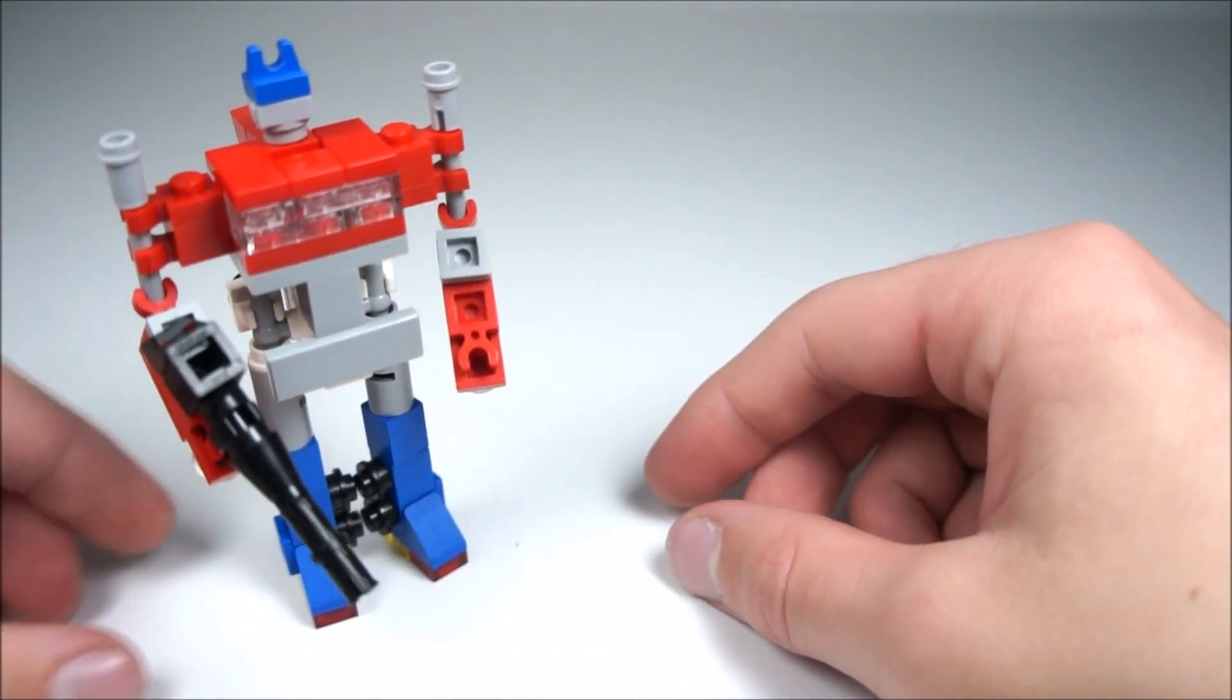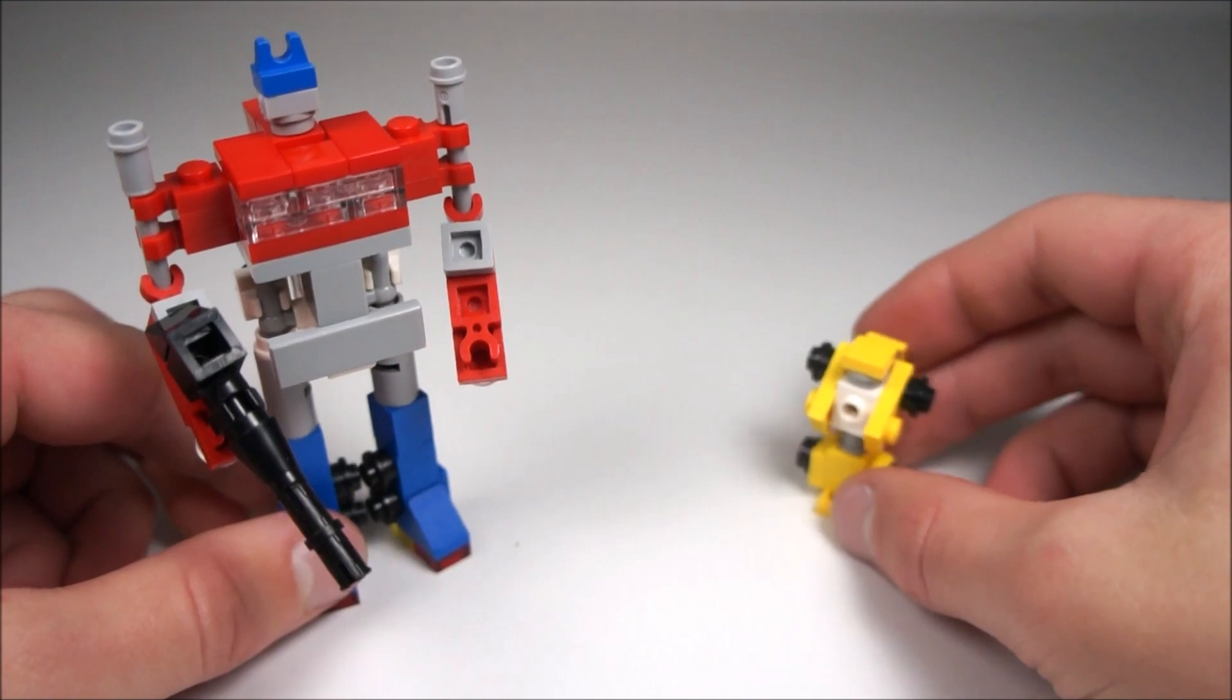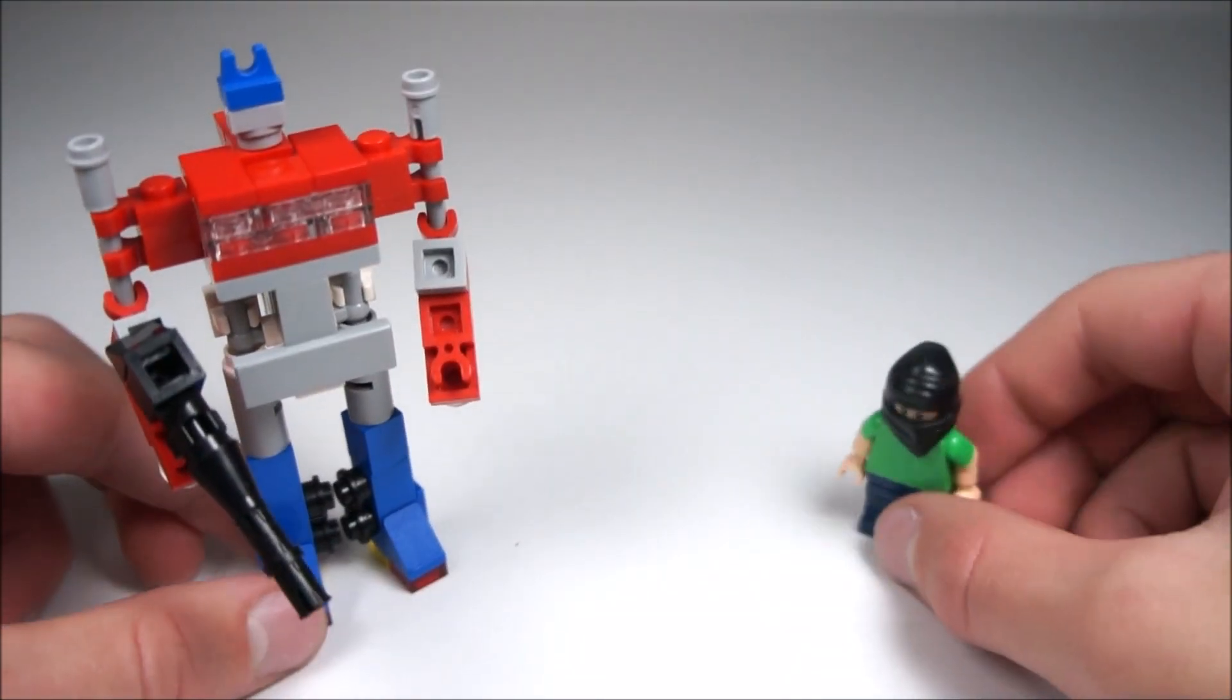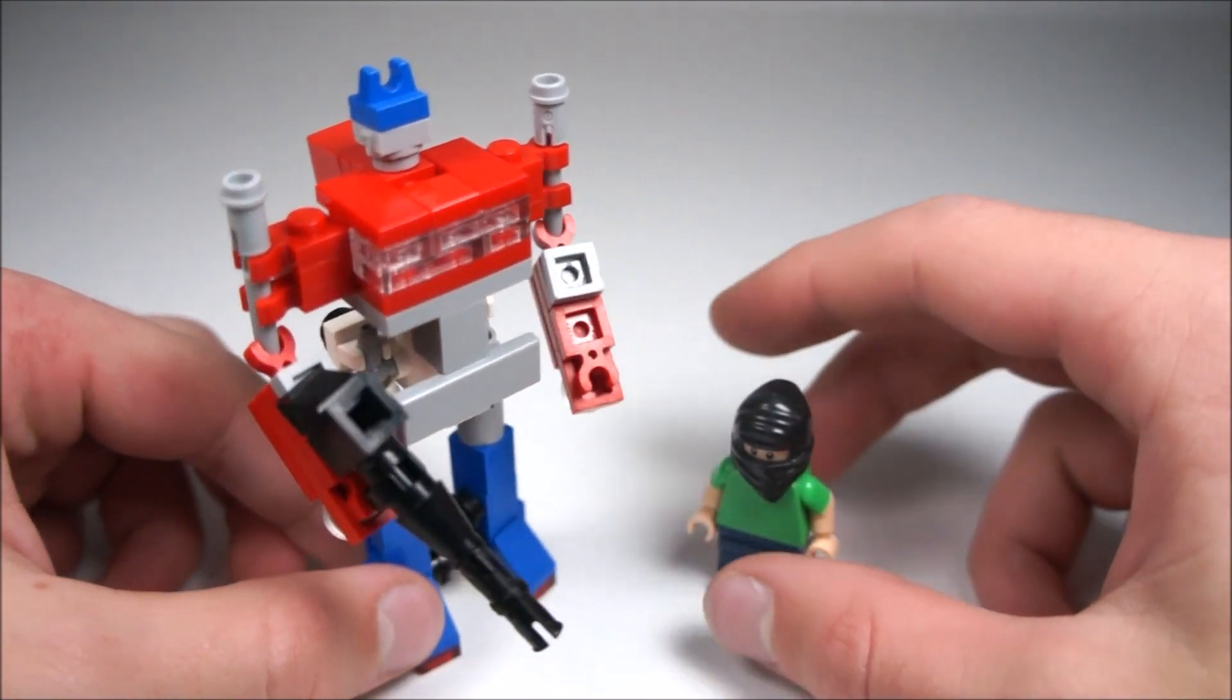And now we'll get into comparisons. Here he is compared to Mini G1 Bumblebee. That looks funny. Here he is compared to the Stupid Ninja Minifigure. That looks okay.